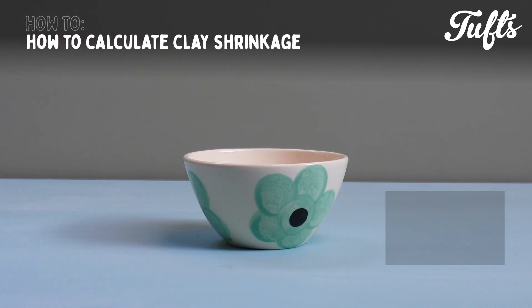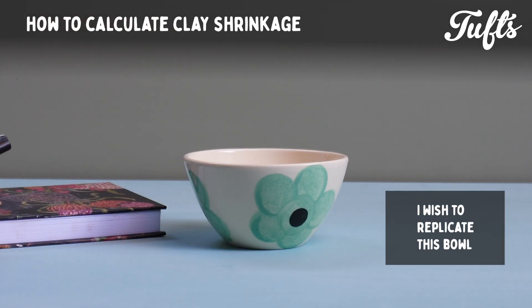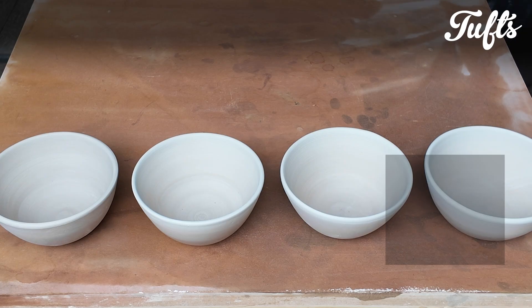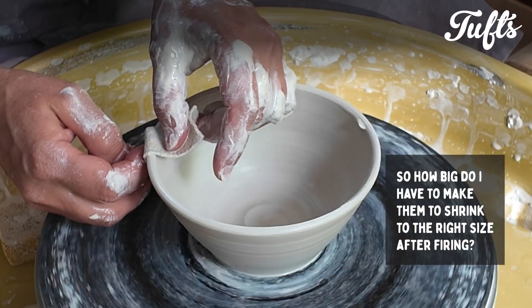I made a set of bowls a while back and gave them away, all but one, and I want to make another set. How big do I have to make them so they shrink to this size after firing?